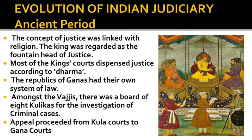Evolution of Indian Judiciary — Judiciary during the ancient period. During ancient times, the concept of justice was linked with religion. The king was regarded as the fountainhead of justice. Most of the king's courts dispensed justice according to dharma. The republics of Ganas had their own system of law. We find the existence of Kulika courts among the Vajjis. There was a board of eight Kulikas for the investigation of criminal cases. Appeals proceeded from Kula courts to Gana courts.